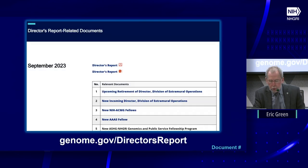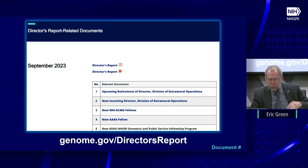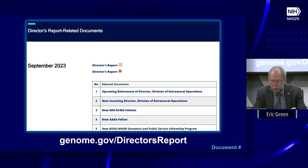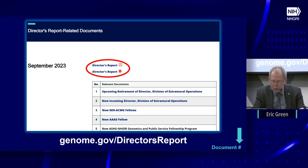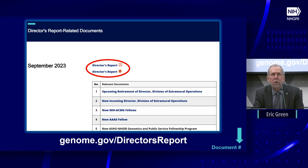For those new to our council meetings, we create an electronic resource associated with the director's report — analogous to a supplemental materials section of a published paper — accessible at the URL shown on this slide. Slides are available in both PowerPoint and PDF formats. Documents cited on individual slides are referenced by a number on the bottom right and are archived on genome.gov as a historical record.